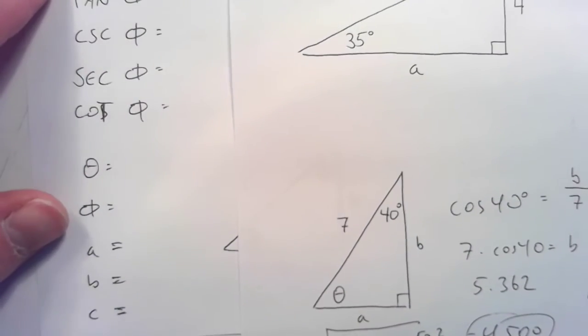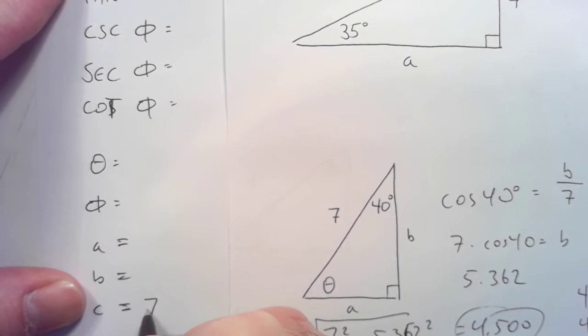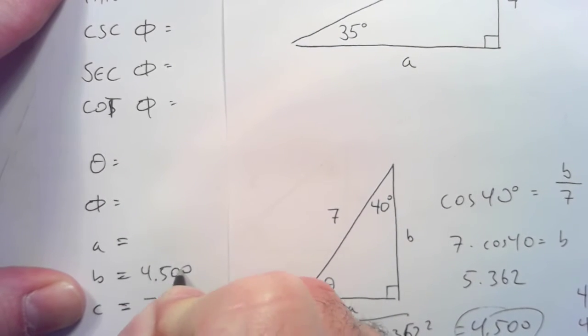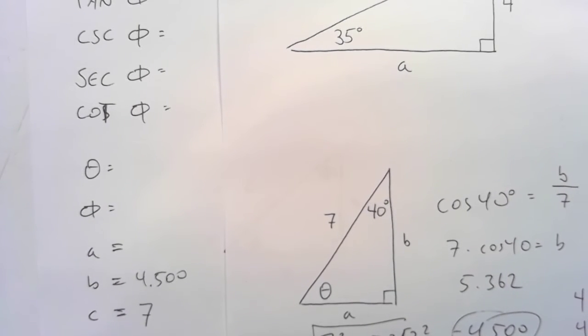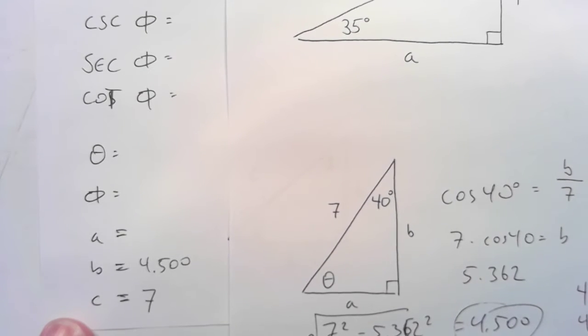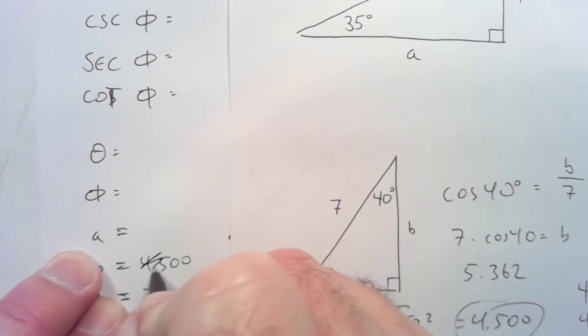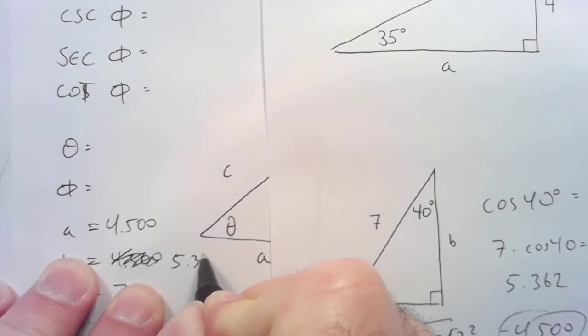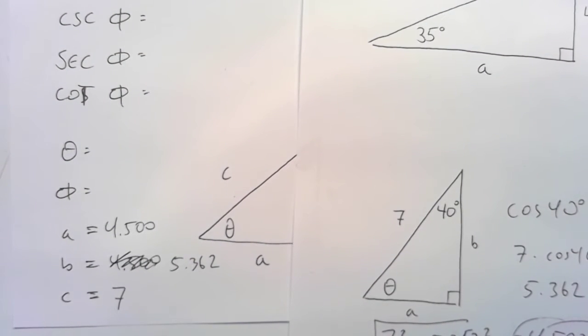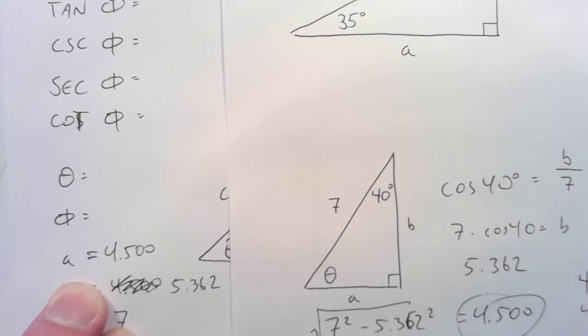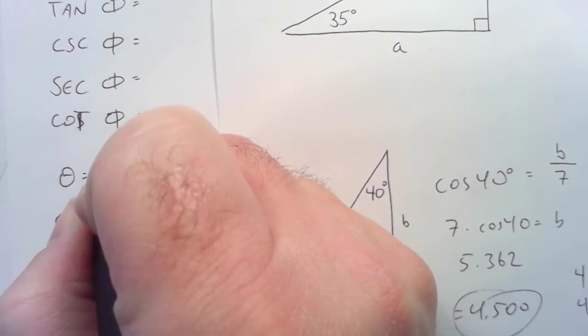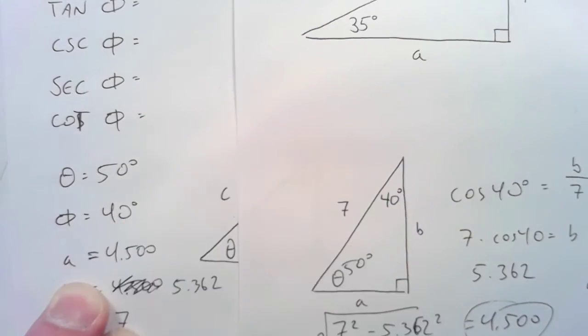So, let me go ahead and record that. So, C is given that 7. And B was just calculated at 4.500. I'm writing all those decimal places just because I want to be sure that that's three decimal places and not something I improperly rounded. That's A, that's 4.5. B was 5.362. Okay. So, now that we've got those three numbers, let's go ahead and get the angles. 90, 40, yeah, it's got to be 50. So, that means theta is 50. Theta is 40.